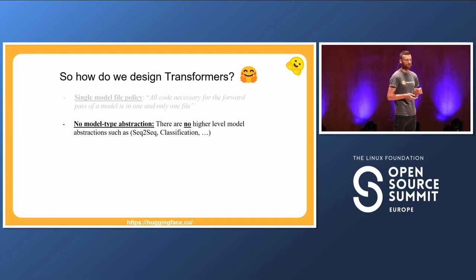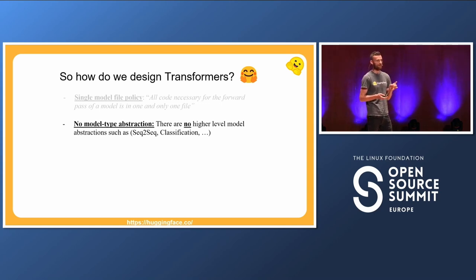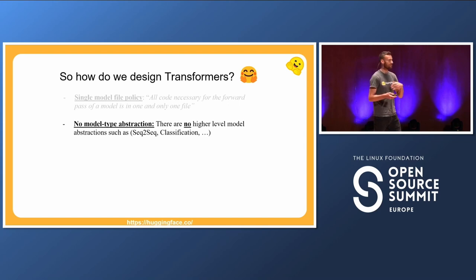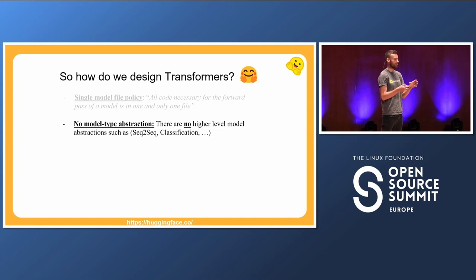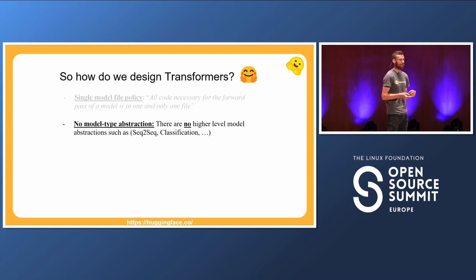Second, we just don't do abstractions. We only have two layers of abstraction in Transformers. Every model has only one abstraction, which we call pre-trained model — all that is, is loading and saving the model. We don't even try to categorize models into things like sequence-to-sequence or classification. Every model has only one abstraction: saving and loading. That's it. Everything else is implemented in the model file.